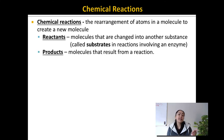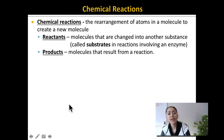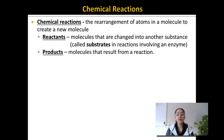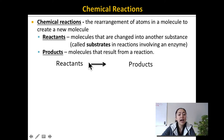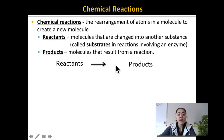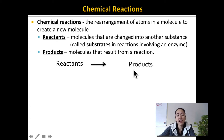What does the reactant turn into? Well, it turns into what's called the product, and this is the result of a chemical reaction. You can simply write out a chemical equation by having the reactants on the left side of an arrow — indicating these are the molecules you started with — and then on the right side of the arrow you have the products, the molecules that are the result of the chemical reaction.